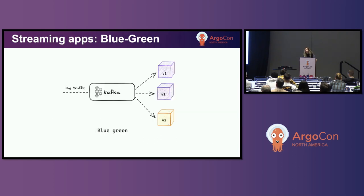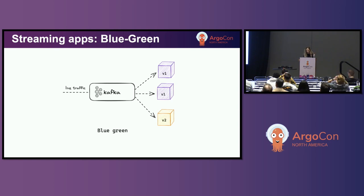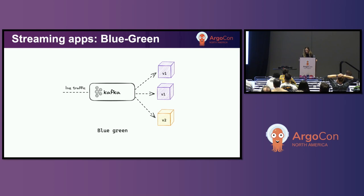Now let's see what strategy we can apply to the streaming application — the Kafka consumer. If I were to apply the same blue-green strategy and create a new version of the application with the same configuration as the first one, this version would act as my green part of the blue-green. But I would have mistakenly deployed a canary, because if I deploy the same configuration on both versions, they will share the same consumer group, and as a consequence they will share the traffic that comes through the Kafka topic.